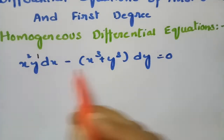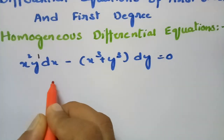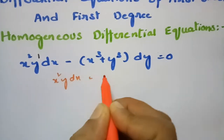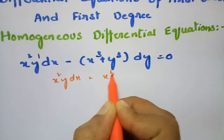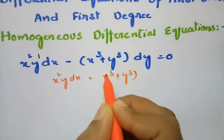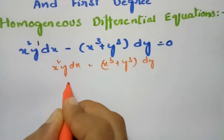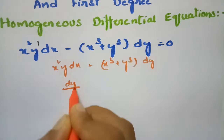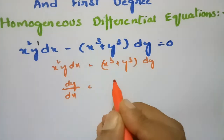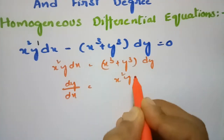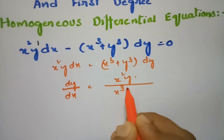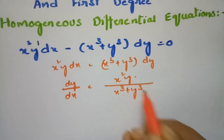We can write this in the form: x squared y dx equals x cubed plus y cubed times dy. Rearranging, dy/dx equals x squared y divided by x cubed plus y cubed.